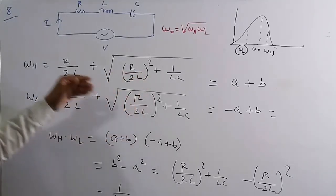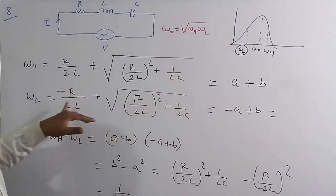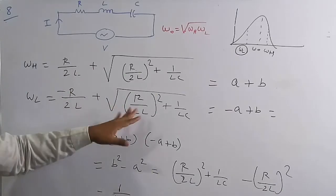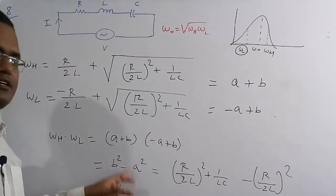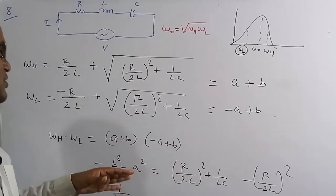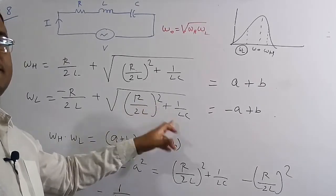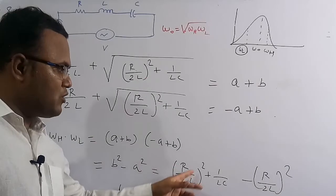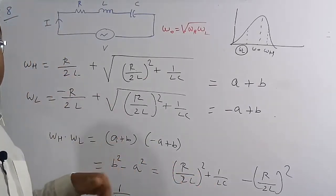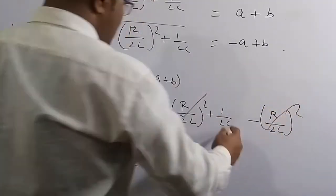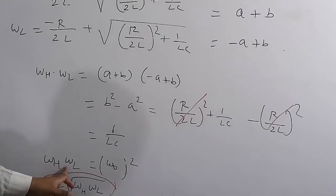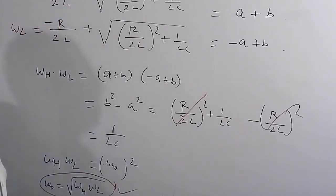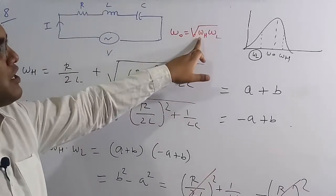Let a = R/2L and b = √((R/2L)²+1/LC). Then ω_L = −a+b and ω_H = a+b. Multiplying: ω_L·ω_H = (b+a)(b−a) = b²−a² = [(R/2L)²+1/LC] − (R/2L)² = 1/LC = ω₀². Therefore ω₀ = √(ω_H·ω_L), proving that the resonant frequency is the geometric mean of the upper and lower cutoff frequencies.